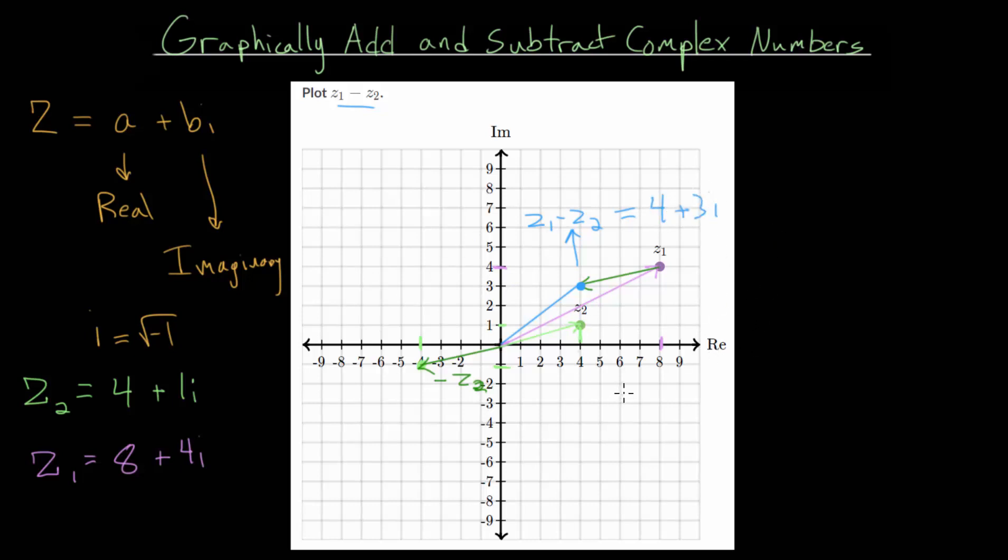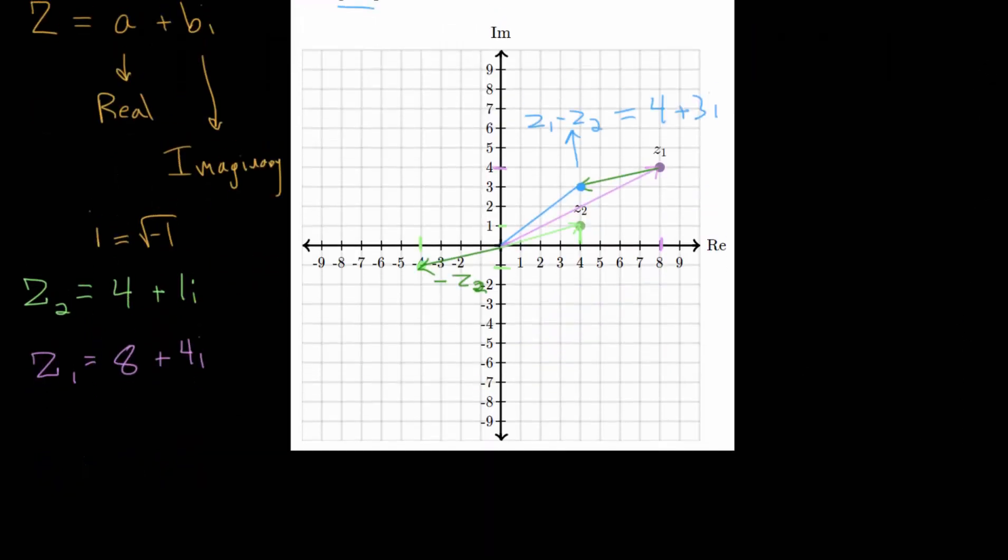So that second method, using vectors, is just a visual way to understand how to add and subtract complex numbers. But you can also do that by just writing them in terms of the real and imaginary parts and then carrying out the subtraction. So let's look at it that way so that we can consider how the two compare to each other and we can check our work.